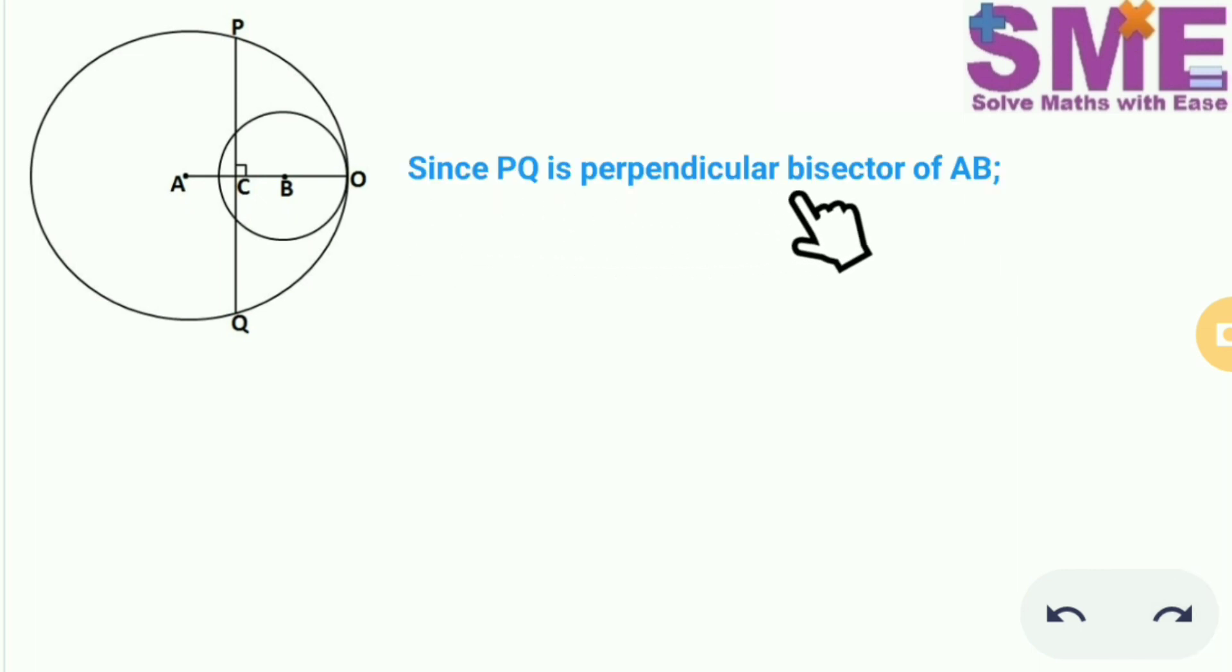Now since PQ is the perpendicular bisector of AB, hence C is the midpoint of AB.